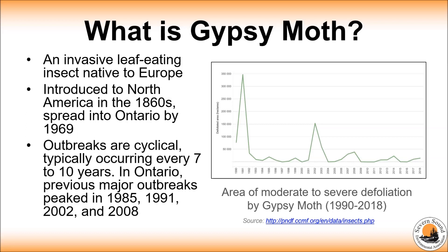An important characteristic of the gypsy moth in Ontario is that their populations go through cycles of ups and downs. The image on the right from the National Forestry Database shows the peaks and valleys in the amount of area moderately to severely defoliated by gypsy moth in Ontario between 1990 on the left side of the graph and 2018 on the right side of the graph.